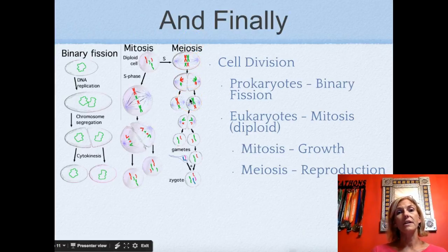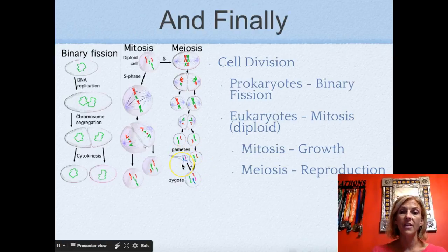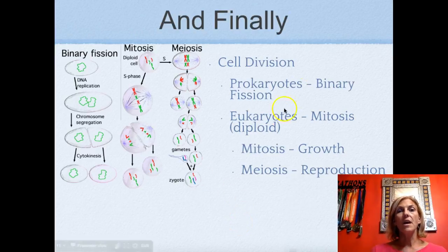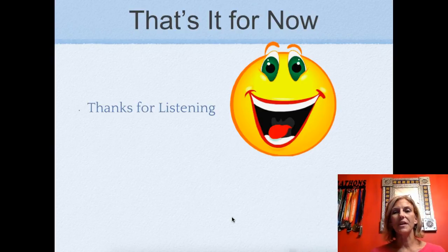Or eukaryotes might go through meiosis — these are your higher-level organisms like animals. Most of us are going to go through meiosis, which cuts our chromosome number in half. That means it has to combine with another gamete in order to form a new organism — the zygote that then becomes the new organism. So prokaryotes replicate through binary fission and eukaryotes either through mitosis or meiosis.